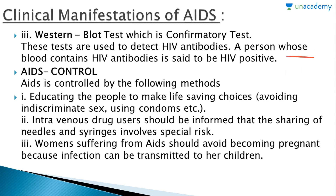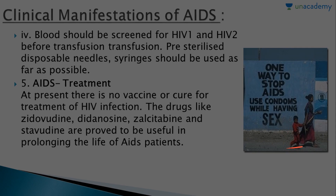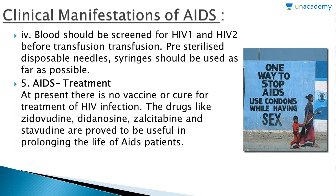AIDS is controlled by the following methods: educating people to make life-saving choices, avoiding indiscriminate sex, or using condoms. Intravenous drug users should be informed that sharing needles and syringes involves special risk. Women suffering from AIDS should avoid becoming pregnant because infection can be transmitted to their children. Blood should be screened for HIV-1 and HIV-2 before transfusion.